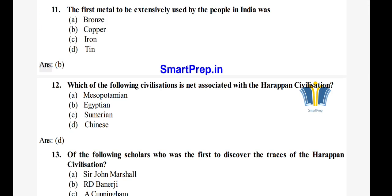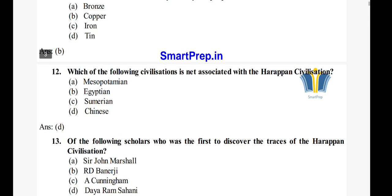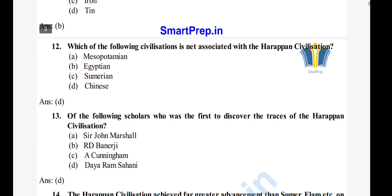Question 13: Of the following scholars, who was the first to discover the traces of the Harappan civilization? Options: A) Sir John Marshall, B) R.D. Banerji, C) Cunningham, D) Aramsani. The right answer is option D, Aramsani. This is a very important question.